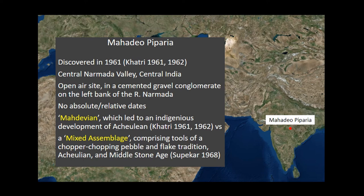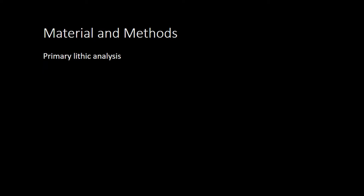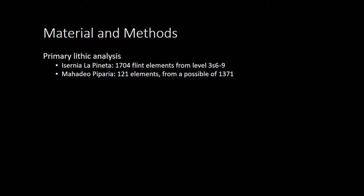That's another reason why we went to Madhya Pipriya — most people who work on South Asia assume this is one of the classic Mode 1 sites in the subcontinent, which might not be true. The methods applied are primarily lithic analysis looking at 704 artifacts from Unit 3.06.9 of Isernia — only the flint elements — as well as 121 elements from Madhya Pipriya.